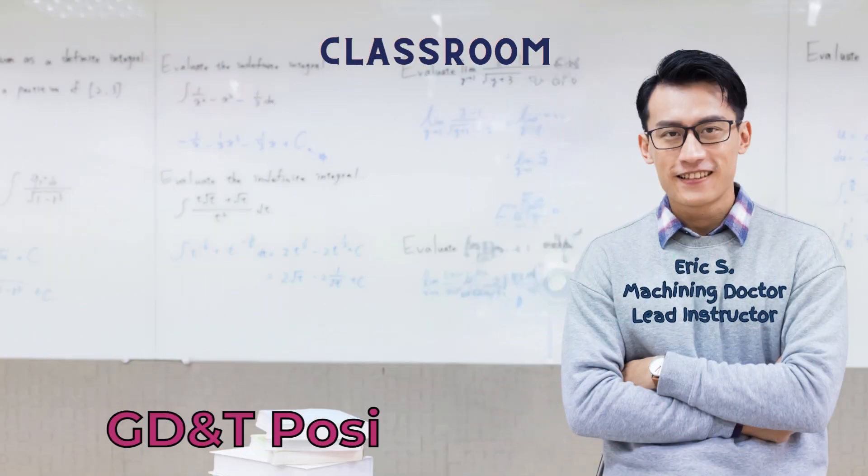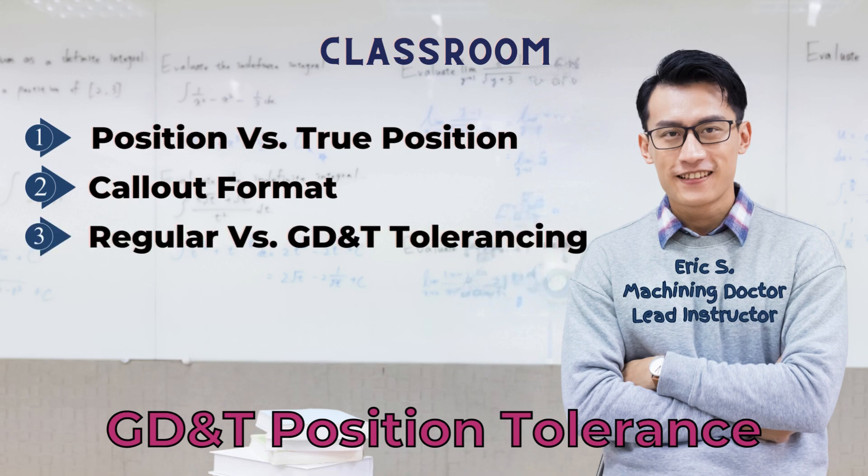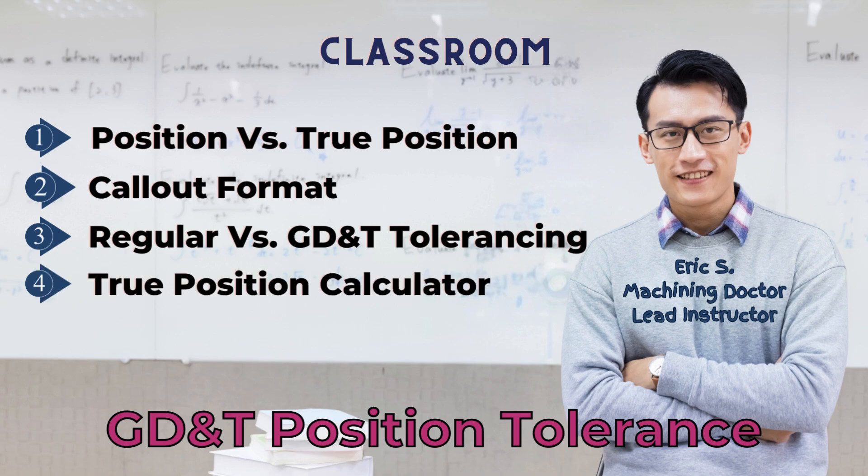These are the topics we will cover: What is the difference between position and true position? The position tolerance callout format. Then we will compare a practical example in three tolerancing cases: conventional tolerancing, position tolerance, and position tolerance with the maximum material condition. Stick around until the end where I will share an online true position calculator that does all the heavy lifting for you.